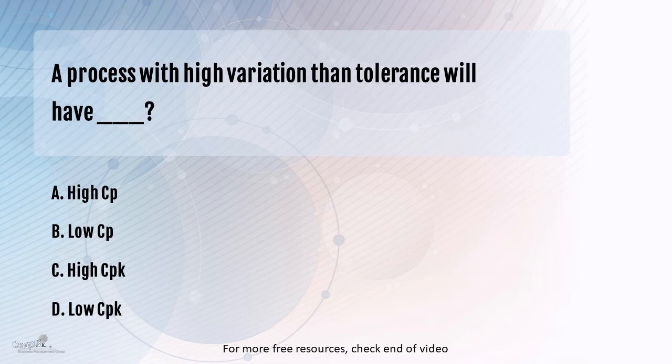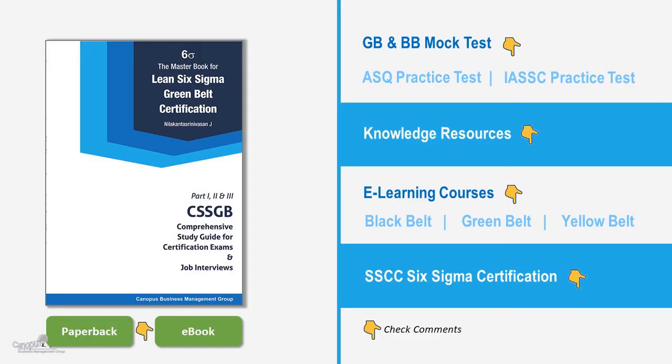The allowed variation by the customer is called tolerance, which is nothing but USL — the upper specification limit — minus the lower specification limit. In the denominator you would have the total variation in the data, and we approximate that to six times the standard deviation, which covers around 99.73% of the data. So in the numerator we have USL minus LSL from the customer specification limits, and in the denominator we have the variation.